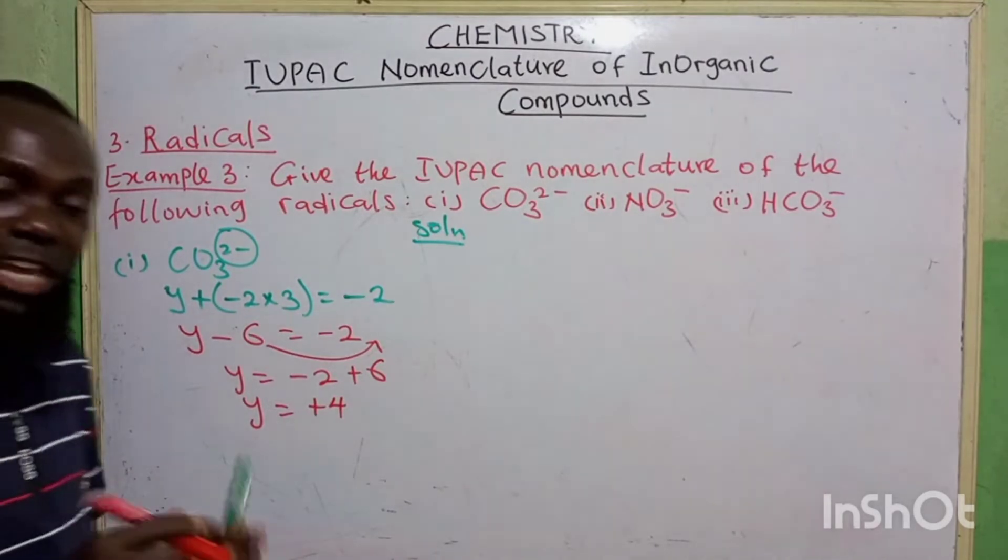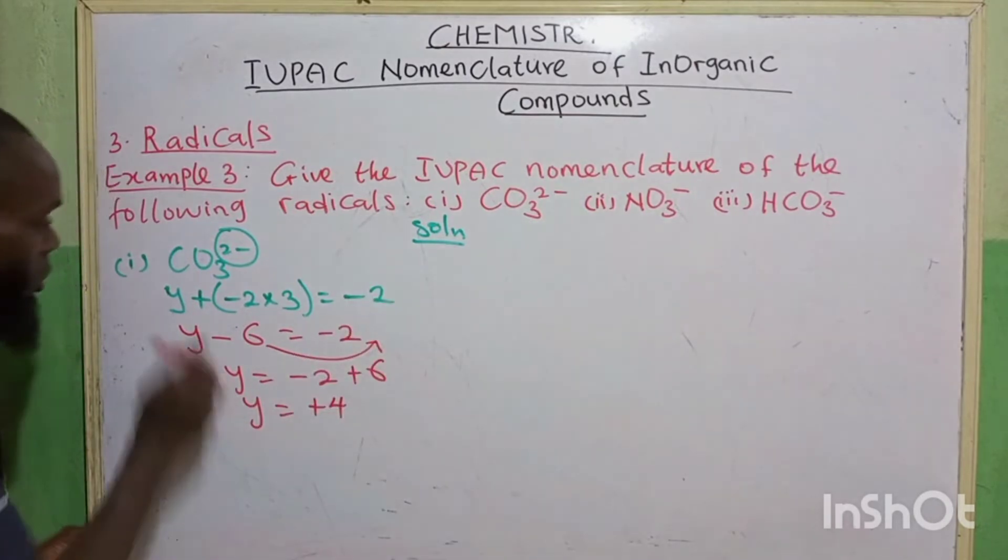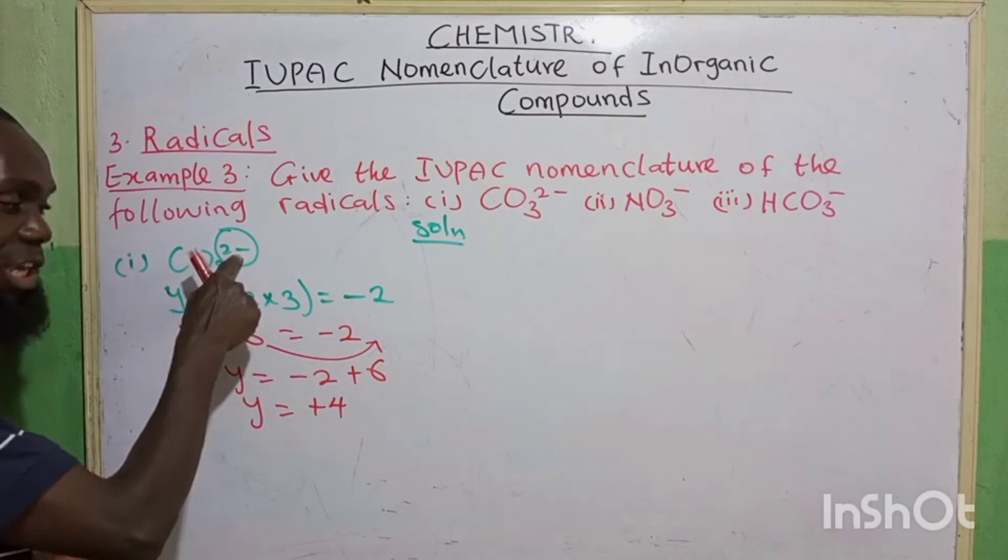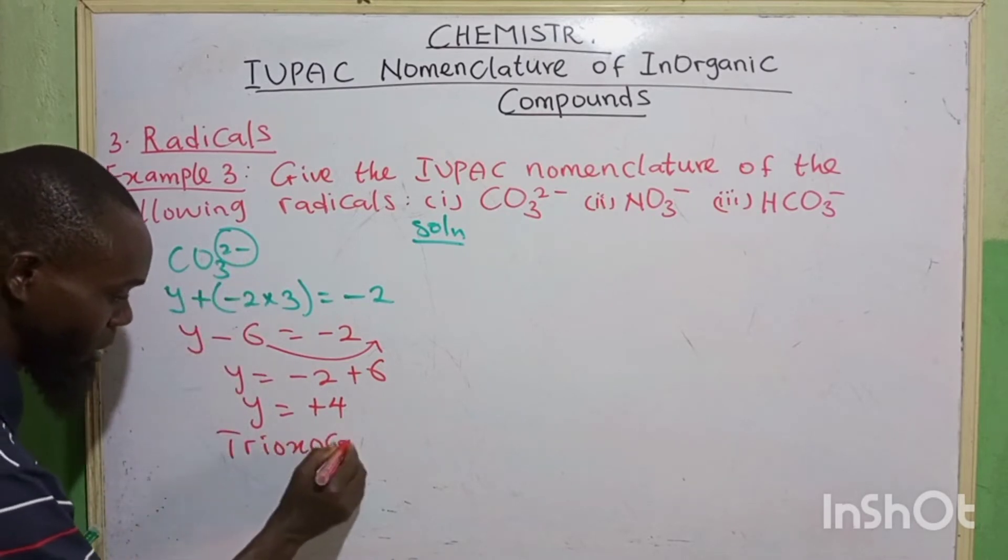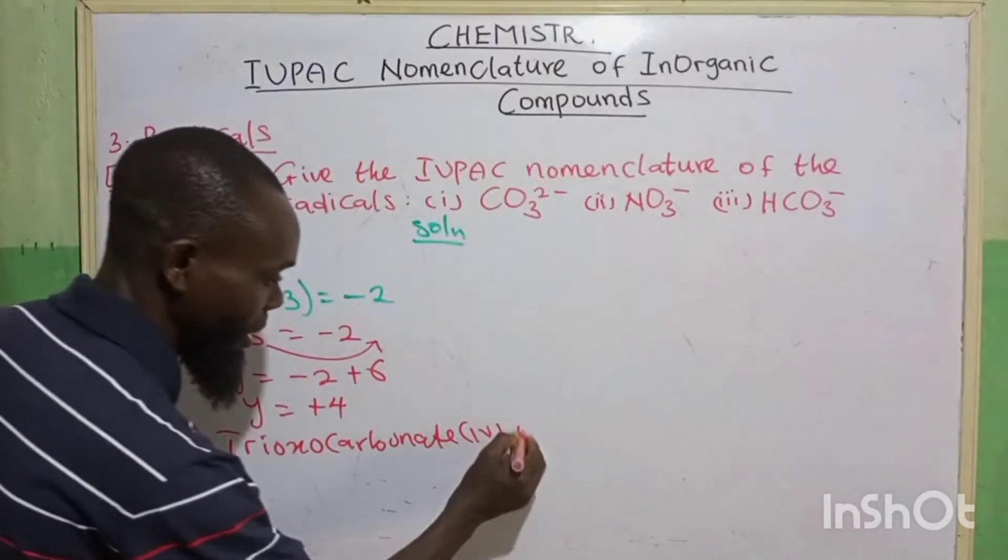Now, the way we normally name acid is the way we name a radical. So let's start from the back. So trioxocarbonate 4 ion.